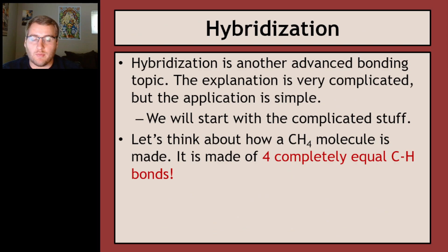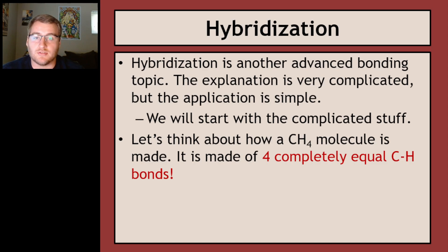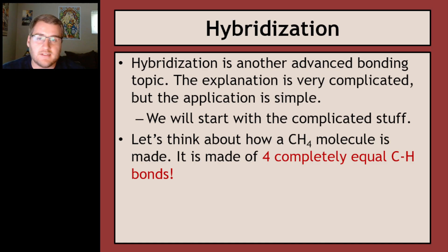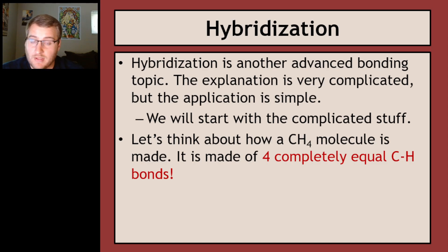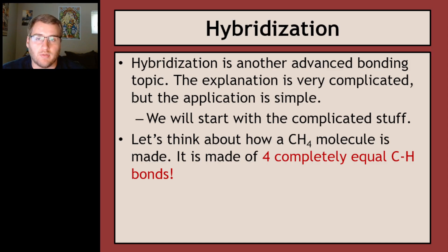Now we have hybridization. There are two sides to it: the very complex chemistry side dealing with electron configurations and advanced bonding, and the actual thing we need to know how to do — which is super easy, one of the easiest points you can earn on the test. The explanation is difficult and easy to get lost in, but focus on the application. We'll have several slides explaining how hybridization works, so listen to that — but if you get lost, just know how to do it when we get to the end examples.